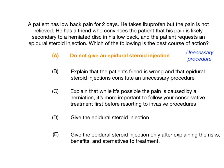Choice B starts by saying 'explain that the patient's friend is wrong' — that first part is confrontational, so we don't choose it. Choice C says 'it's more important to follow your conservative treatment first,' which is too narcissistic for USMLE/COMLEX. Choice D — you obviously don't give the injection. Choice E — you would never give something unnecessary this early in low back pain regardless of explaining risks, benefits, and alternatives. Therefore choice A is correct.